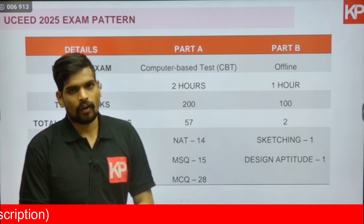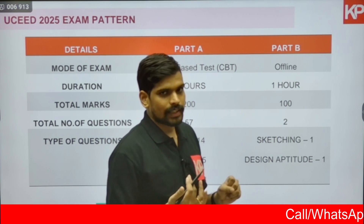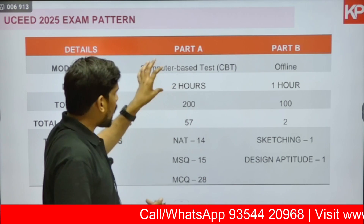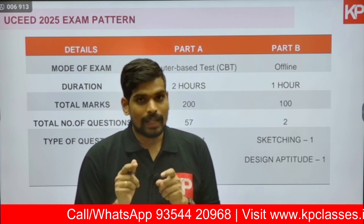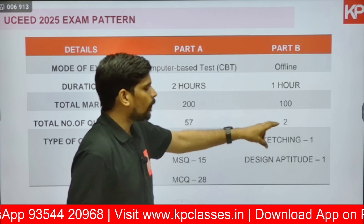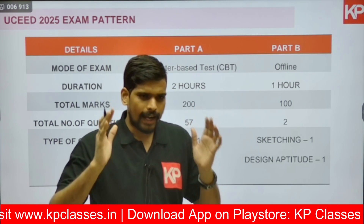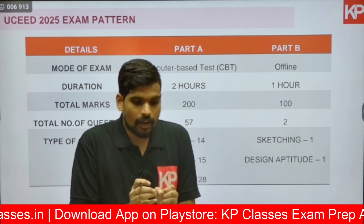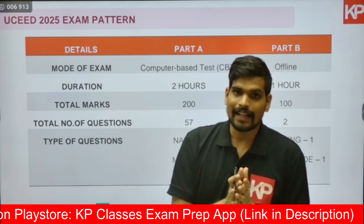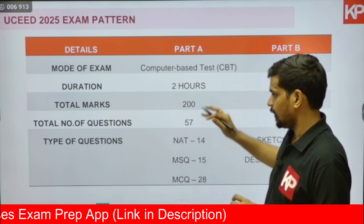The total UCEED examination is for 300 marks. Part A, the computer-based test, carries 200 marks, and Part B, the sketching test, carries 100 marks. You might think Part A is more important due to higher weightage, but consider Part B: the 100 marks come from just two questions in one hour — each question is worth 50 marks. So you need strong sketching skills to score well, as only two high-weightage questions determine your Part B score.